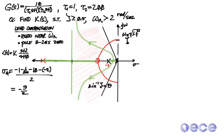Let's look at placing a pole exactly somewhere in the plane. So here we have a transfer function, 10 over tau_1*s plus 1 times tau_2*s plus 1, and we've got some values tau_1 equals 1, tau_2 equals 2.88. And so the question is, in this specific case, I'd like to find some compensator K(s), such that zeta is greater than or equal to 0.5 and omega_n is greater than 2 radians per second.